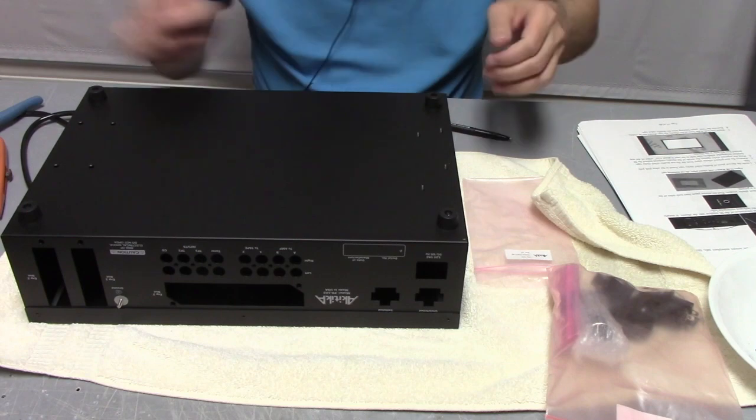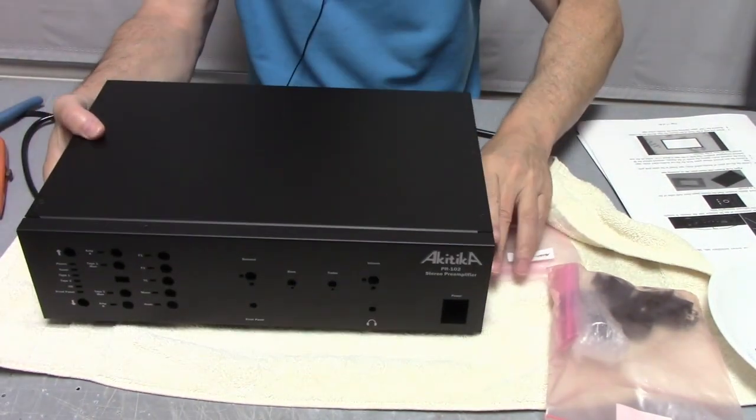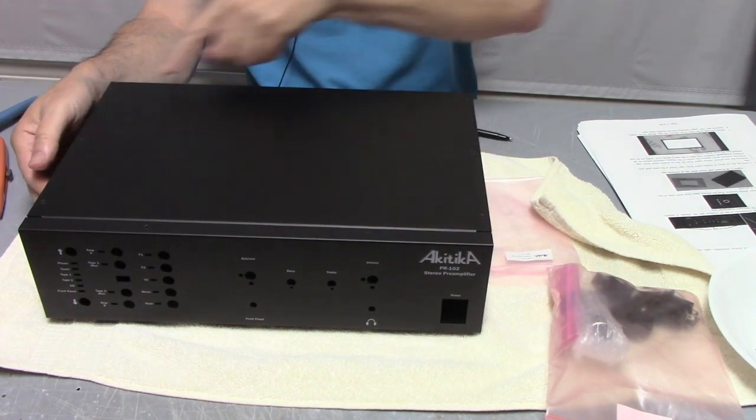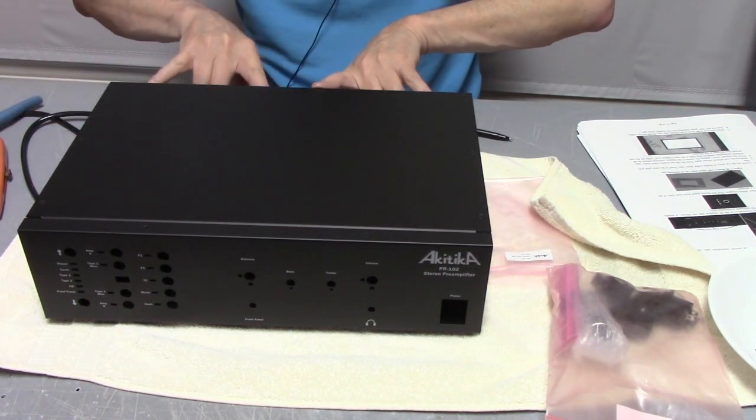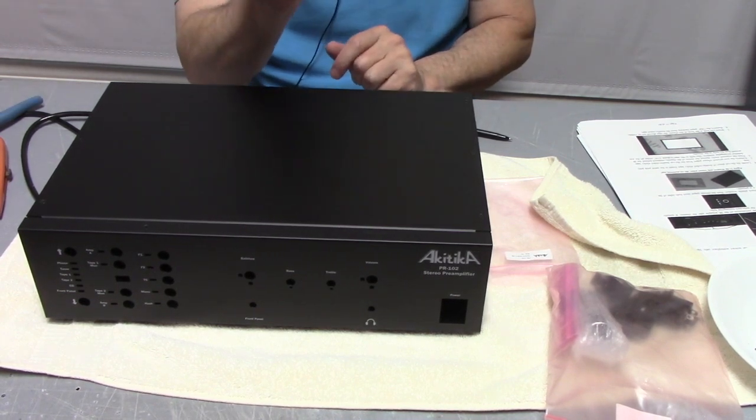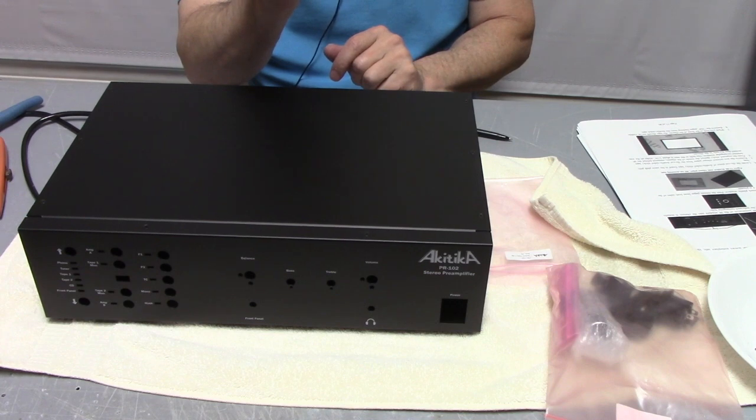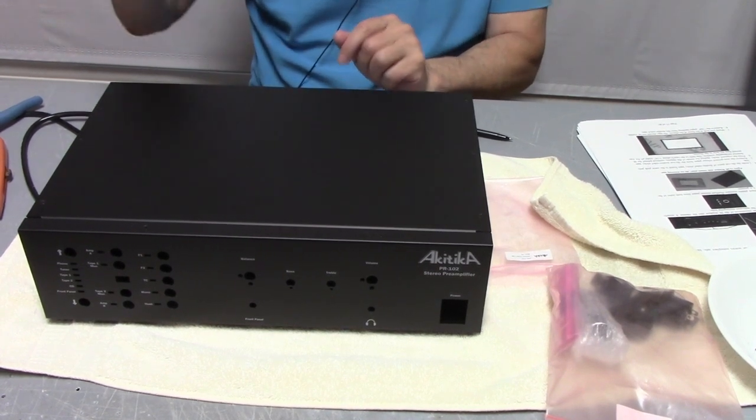Looks like now it's time to remove the lid. 11 screws. 6, 2, and 3 along the back. You'll need a small Phillips head screwdriver to do that. I won't bore you with that. You know where the screws are. And we'll see you in a second for the next step.